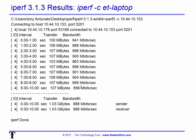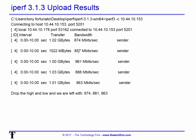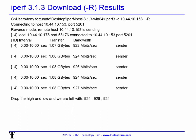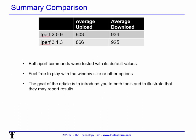With version 3, the output and numbers are slightly different. I ran the same five-test process — drop the high, drop the low, left with three. Then I did the same with dash R for download. Putting it all in a chart: version 2 average upload was 903 megabits per second, version 3 was 866. Average download was 934 and 925 respectively. The point isn't that one is bad — it's that they are different programs that behave differently, and these are all default values.